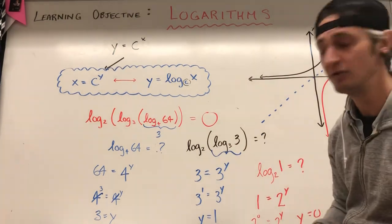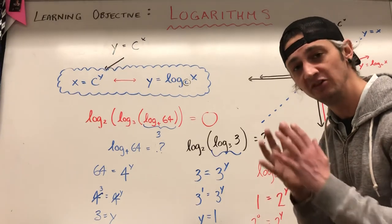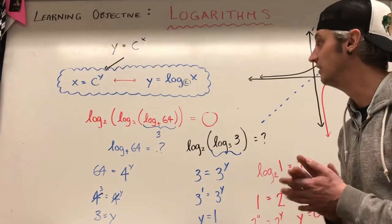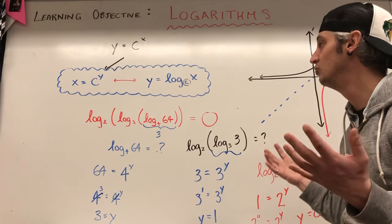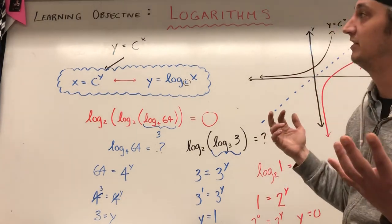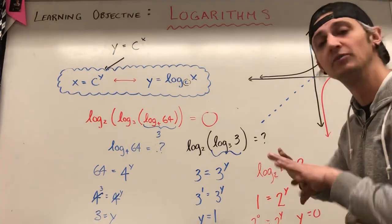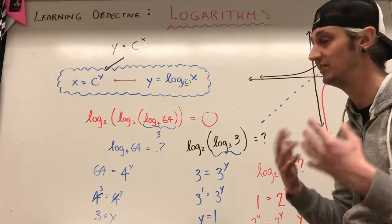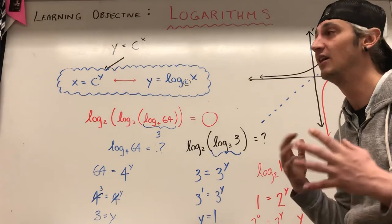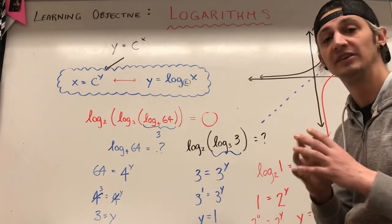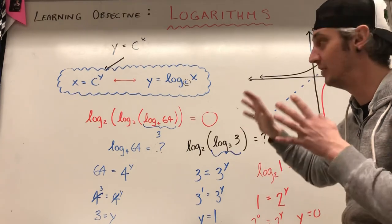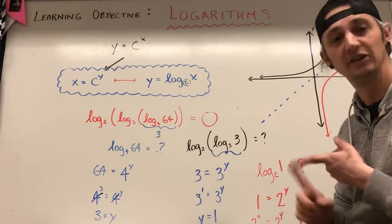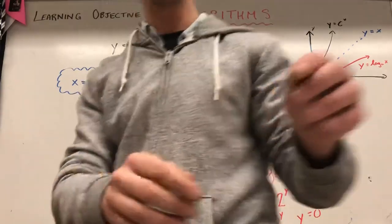These are just nested logarithms — we use BEDMAS, start in the innermost bracket, and work our way out. This is really just playing around moving between logarithmic form and exponential form, and it's a building block to move forward and start transforming logarithms. Just like quadratic and exponential functions, we can transform logarithmic functions using a, b, h, and k — we'll carry on with that in the next video.